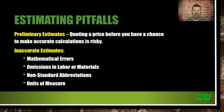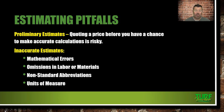Preliminary estimates: quoting a price before you have a chance to make accurate calculations is risky — don't do it. Inaccurate estimates come from mathematical errors, omissions in labor or materials, non-standard abbreviations on plans, and units of measure. You need to be able to read a scale and read dimension lines to accurately figure out plans and estimate projects.